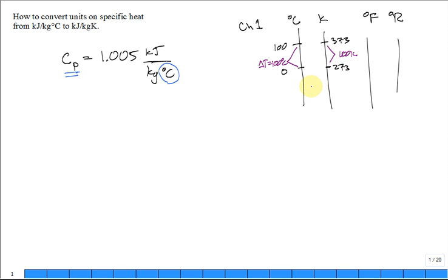And we find a change in the increment from hotness to coldness of 1 degree C is the same change in hotness to coldness of 1 Kelvin.